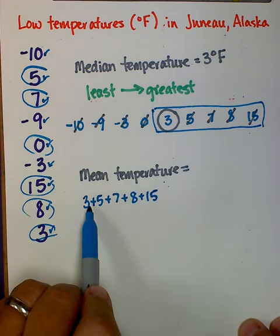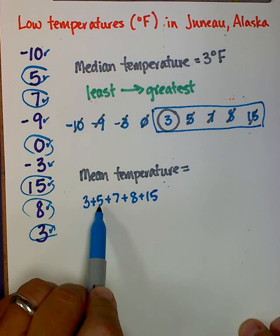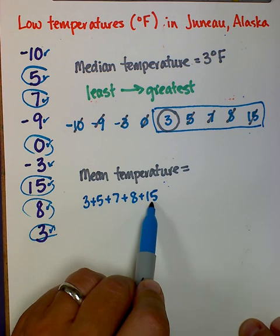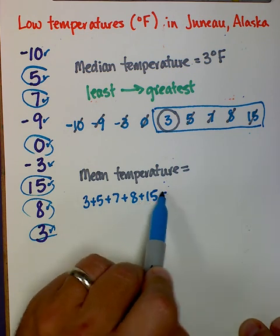So I have 3 plus 5 is 8, plus 7 is 15, plus another 15 is 30, plus 8 is 38.